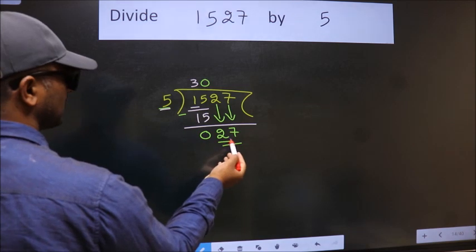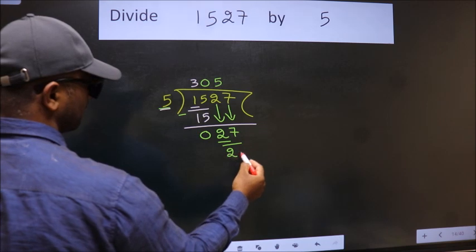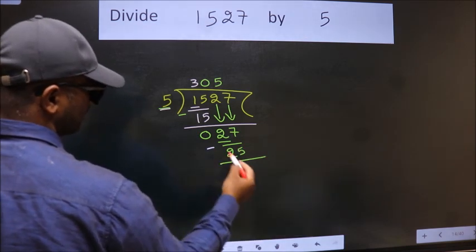A number close to 27 in 5 table is 5 times 5, 25. Now we subtract. We get 2.